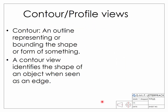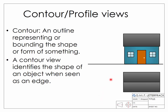To start off, we're going to look at a background concept which we're going to use to solve these questions, and that's the concept of a contour or profile view. A contour is an outline representing or bounding the shape or form of something. A contour view is basically the view which identifies the shape of the object where it's seen as an edge. Looking at the example of a house — here's the front elevation and plan view — from these two views we don't know if the back of the roof is flat or sloping. If we look in from the side and take an end view, we can see the two surfaces as an edge and see the true pitch of the roof surfaces. In this case the end view is our contour view.